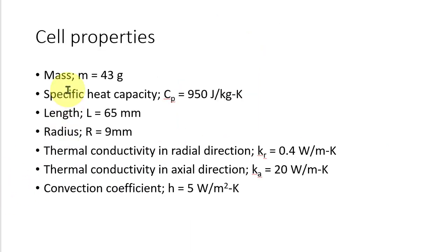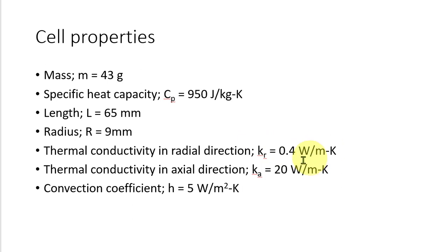We need to know some cell properties. We assume the mass is 43 grams, the specific heat capacity is 950 joules per kilogram Kelvin, the length is 65 millimeters, and the radius is 9 millimeters. The thermal conductivity in the radial direction is 0.4 watts per meter Kelvin, in the axial direction it is 20 watts per meter Kelvin, and the convection coefficient is 5 watts per meter squared Kelvin.